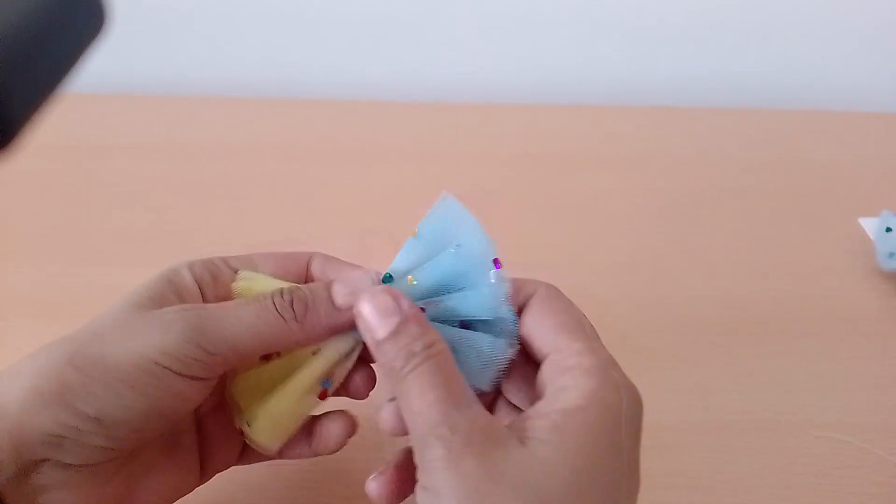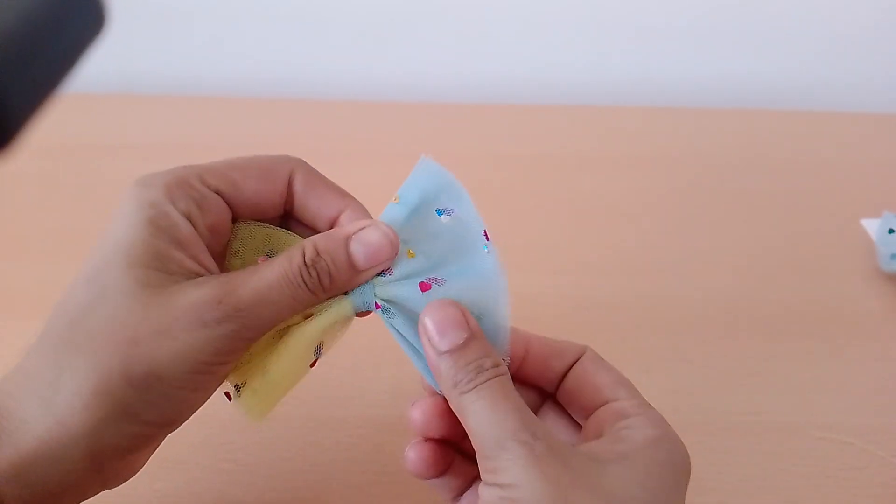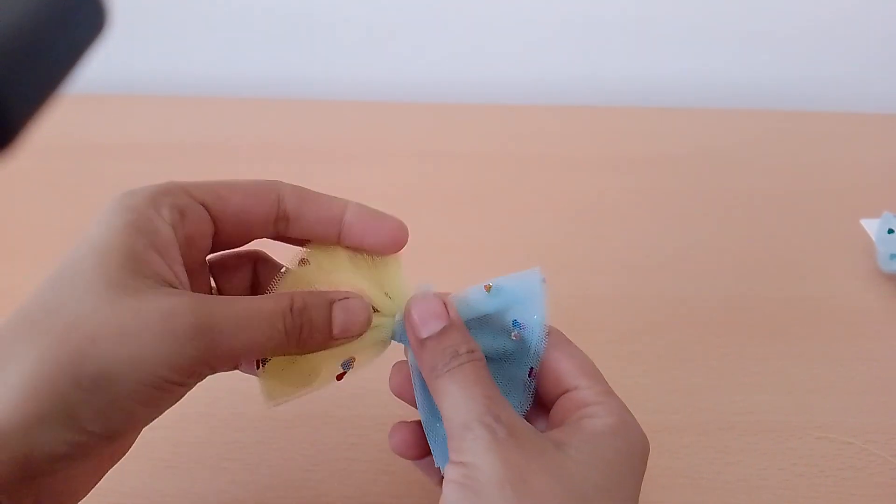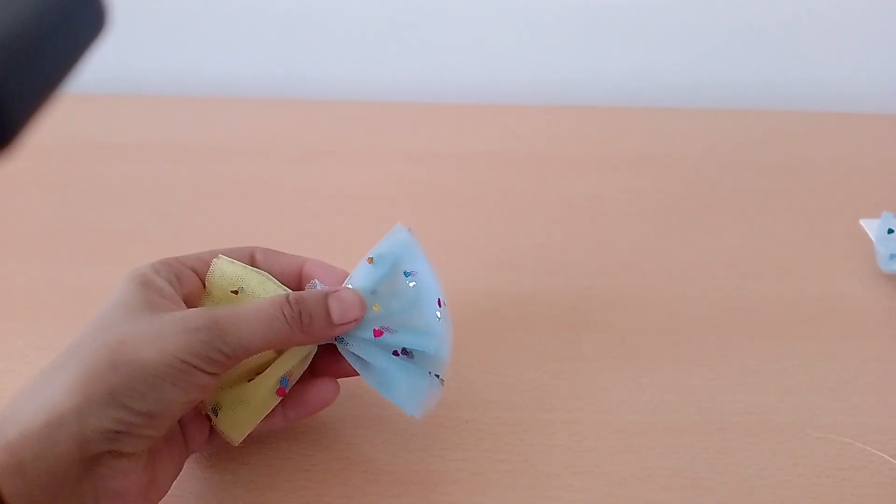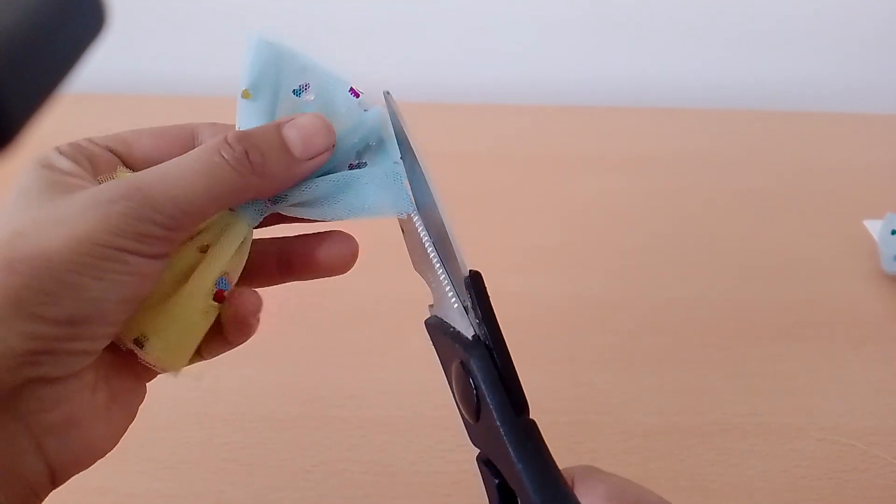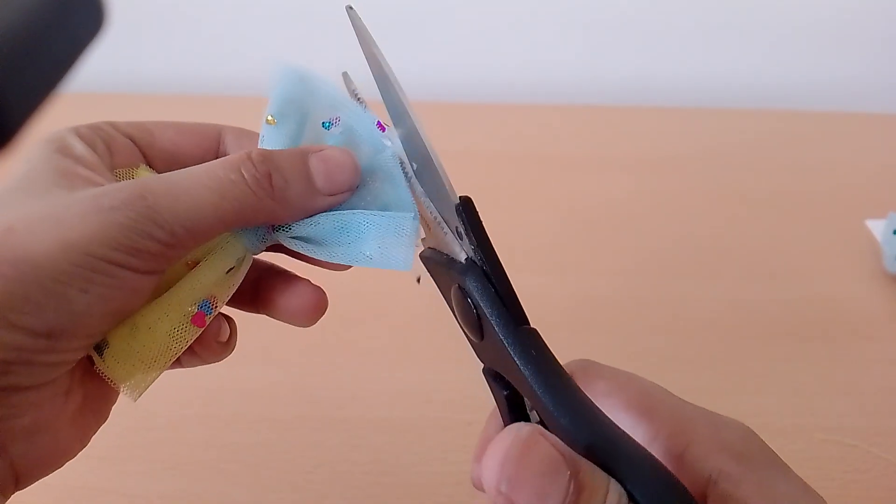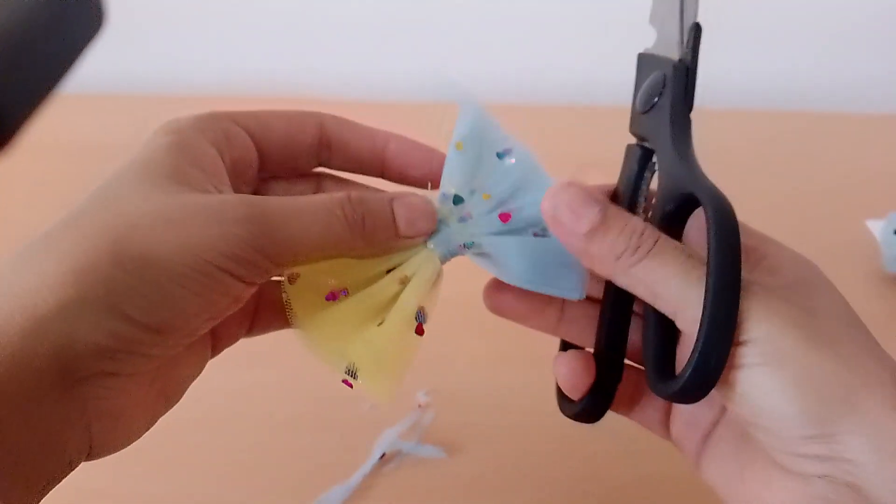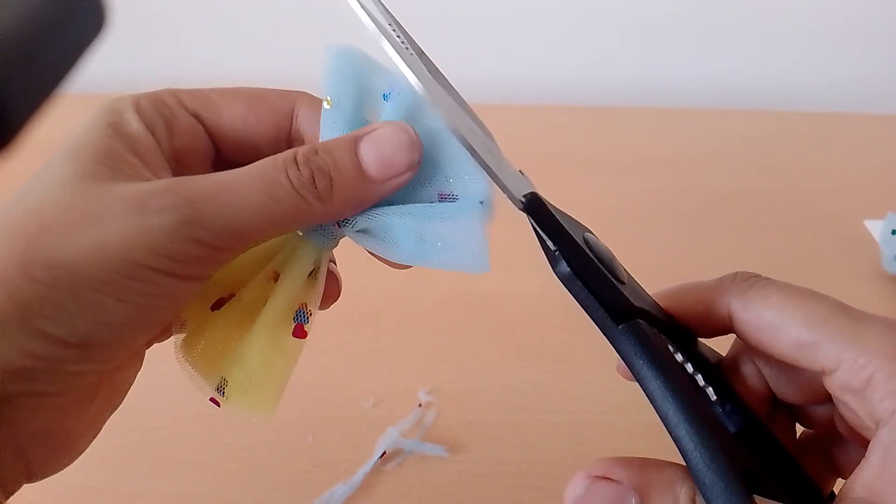After that to make it look more beautiful cut the extra edges that will give it a more neat look. Since the fabric is so light you can't see the extra edges clearly.